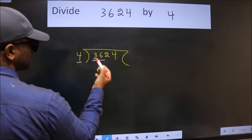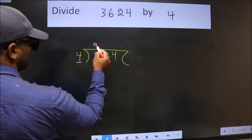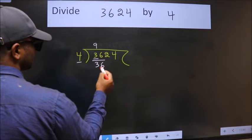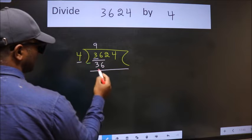So we should take two numbers, 36. When do we get 36 in 4 table? 4 nines 36. Now we should subtract. We get 0.